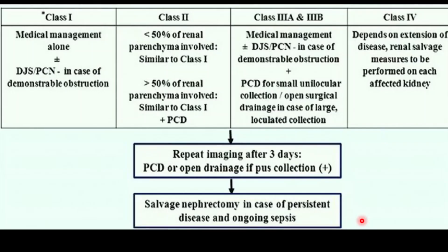The importance of this classification is that it decides the need for intervention. Most of the time, Class 1 and Class 2 patients respond to antibiotics. If there is no response, you may need to place a DJ stent to drain thick pus into the bladder, or percutaneous nephrostomy may be required. For Class 3a or 3b, there is a high chance of rapid deterioration, and you need to plan for intervention at an earlier stage.